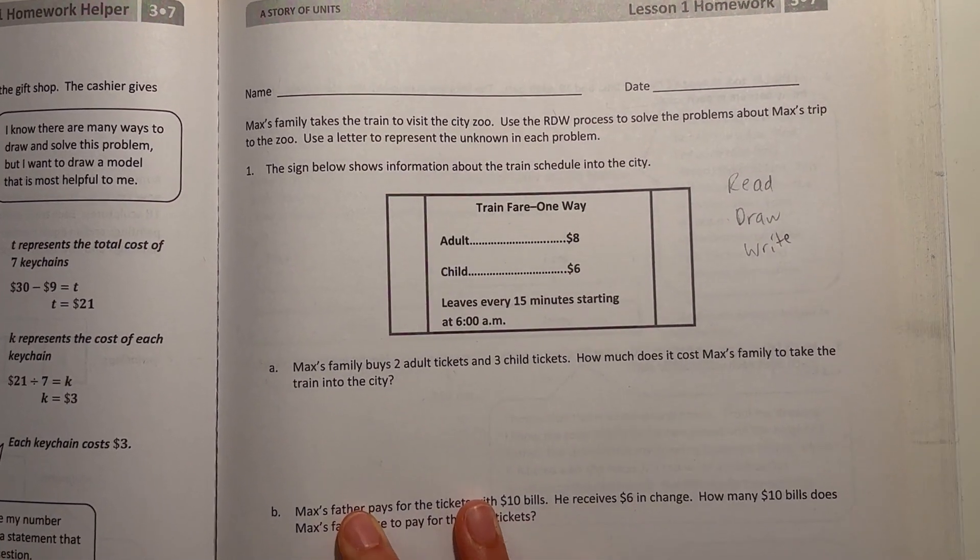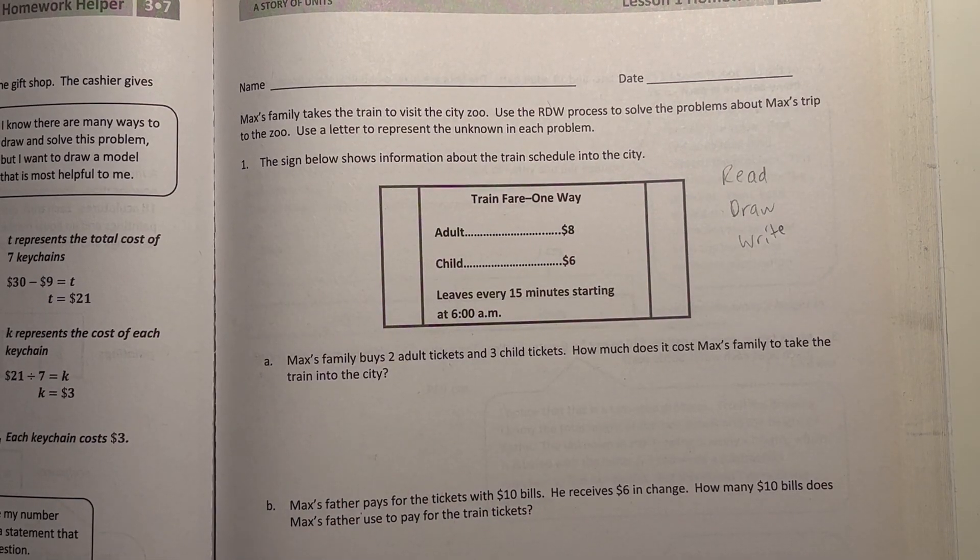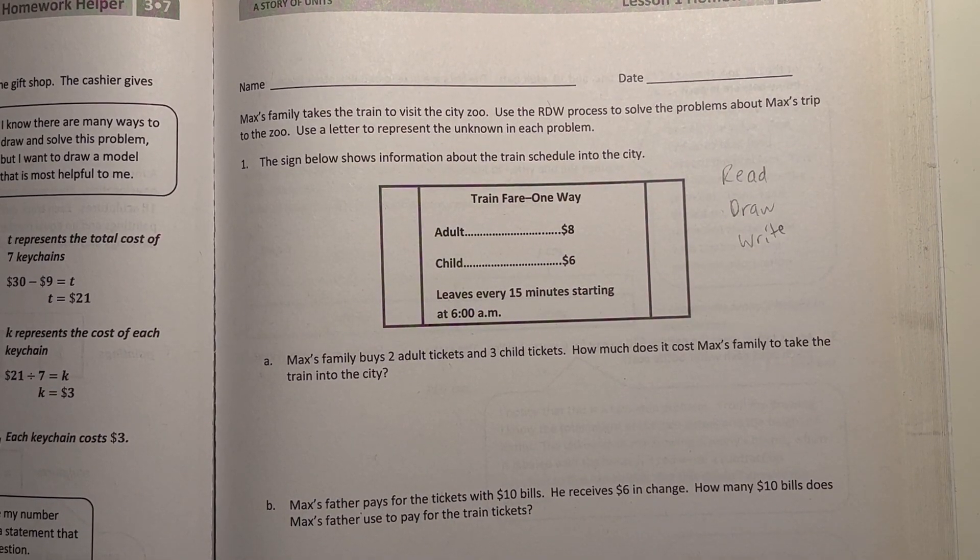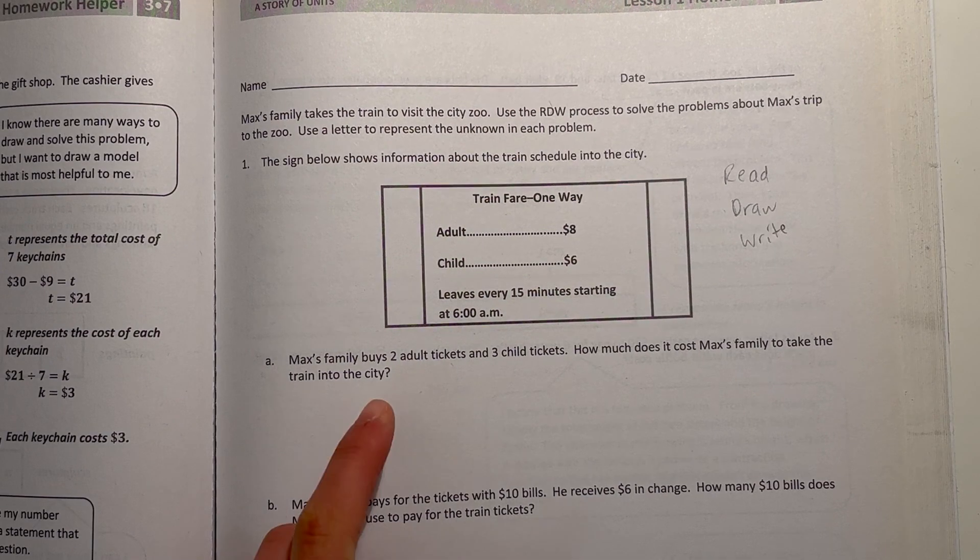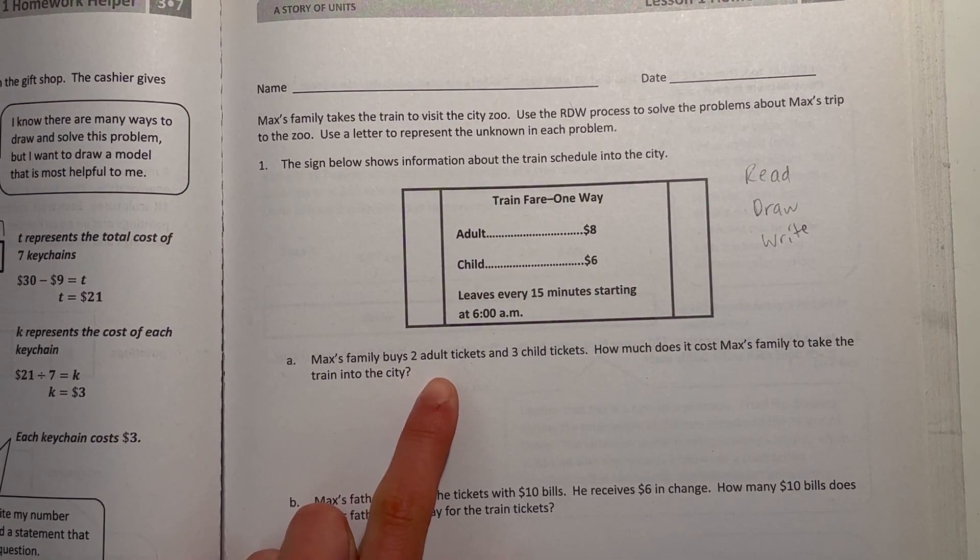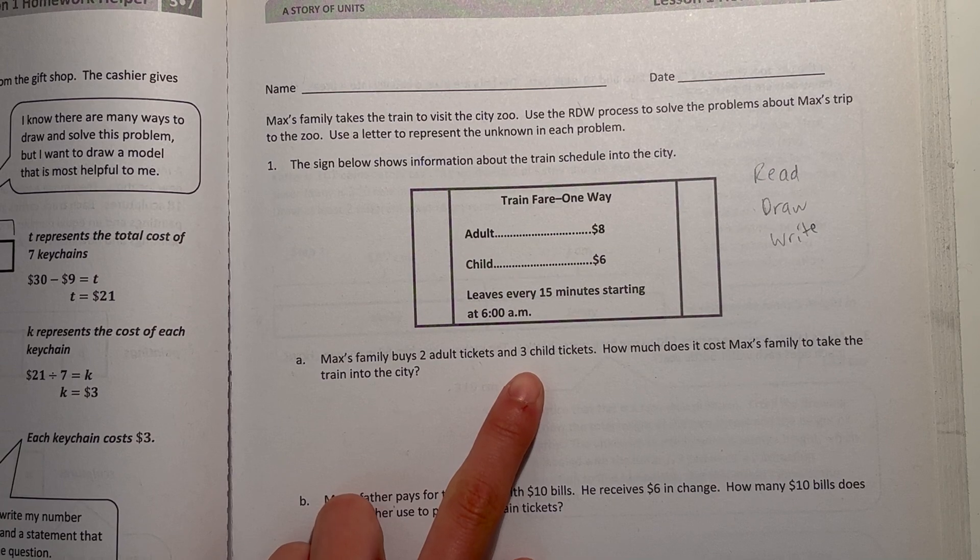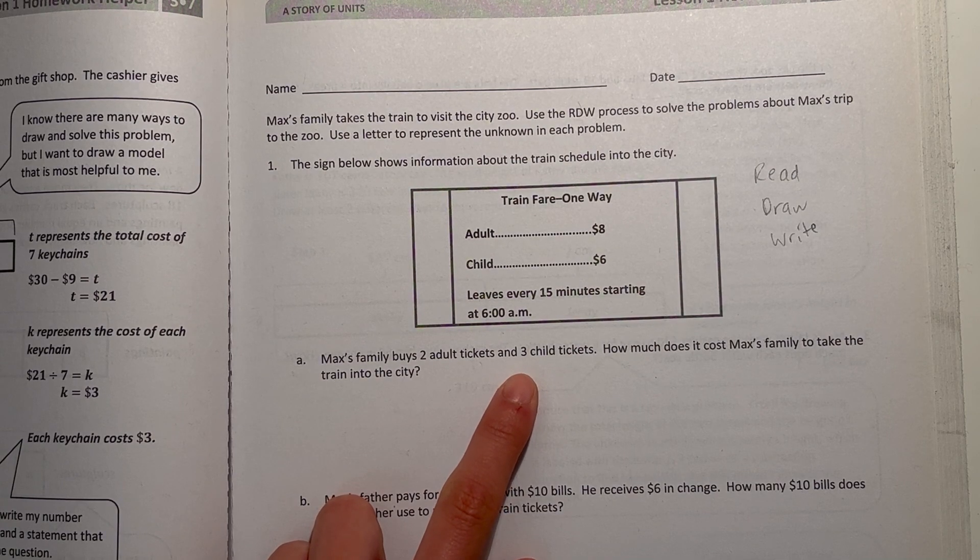Alright, so let's go to A. First, let's read the problem. Max's family buys 2 adult tickets and 3 child tickets. How much does it cost Max's family to take the train to the city? Alright, so now we understand what the problem is and what it's asking for. What it's asking for is how much they paid for those 2 adult tickets and 3 child tickets. So now we can draw it out.